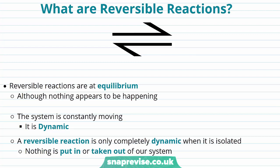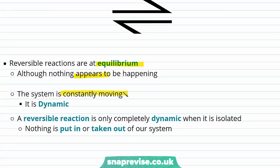Reversible reactions are represented with a symbol showing two half arrows facing in different directions. This sign represents the fact that the reaction is at equilibrium. Although nothing appears to be happening, the system is actually constantly moving — it is dynamic. A reversible reaction is only completely dynamic when it's isolated, meaning nothing is put in or taken out of the system. It's a completely closed system.